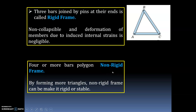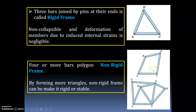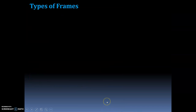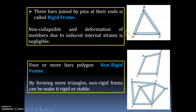Four or more bars form a polygon, which is a non-rigid frame. By forming more triangles, a non-rigid frame can be made rigid or stable. You can clearly see the difference: a rigid frame has only three bars joined by pins at their ends with no deformation, while a non-rigid frame has four or more bars but can be stabilized by adding triangles.